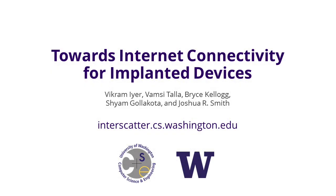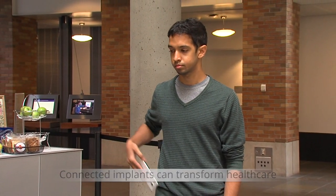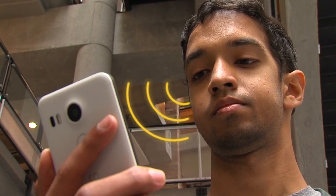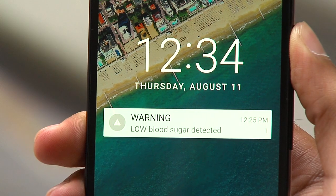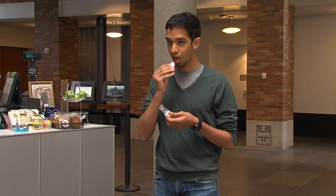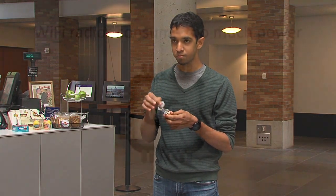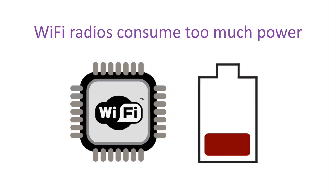We introduce InterScatter, which for the first time enables implanted devices to talk Wi-Fi. Smart contact lenses or brain-machine interfaces that talk to your phone would transform how we manage chronic diseases. For example, a contact lens could monitor a diabetic's blood sugar level and provide them early warnings. The key challenge is that Wi-Fi radios consume significant amounts of power and are infeasible on implanted devices. We introduce InterScatter to address this problem.